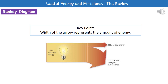In the diagram shown, we're starting off with 1,500 joules of electrical energy in our light bulb. That's converted into 300 joules of light energy and 1,200 joules of heat energy. Because it's a light bulb, the useful energy is the light energy, and the wasted energy is the heat.